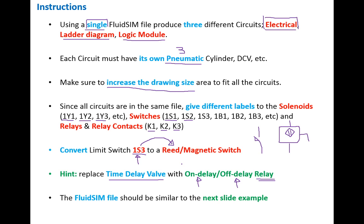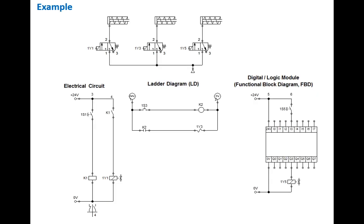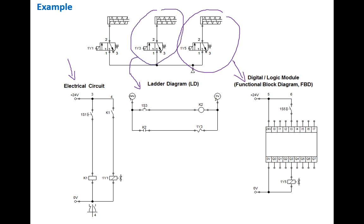The final FluidSim file should look like the example shown, where we have three circuits — electrical, ladder, and logic module — each with its corresponding pneumatic circuit. Note that the relay label here is K1, while in another circuit it is K2. The solenoids are labeled 1Y1, 1Y3, and 1Y5 respectively — different labels to avoid the duplicate component warning. I hope this presentation was helpful.